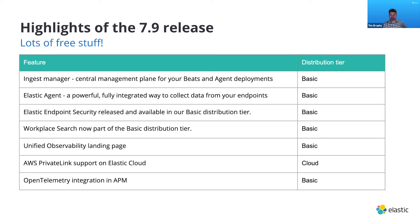Workplace Search used to be a paid option — only available at the Platinum tier — or you could only get it as a paid cloud service. But now it's part of our free basic tier. We've also changed the observability landing page, giving you a somewhat different view of your infrastructure and environment that makes it a lot easier to troubleshoot.